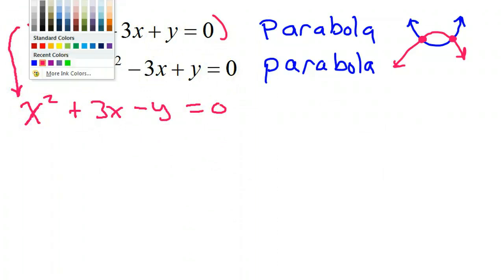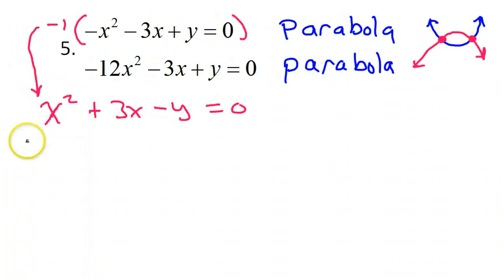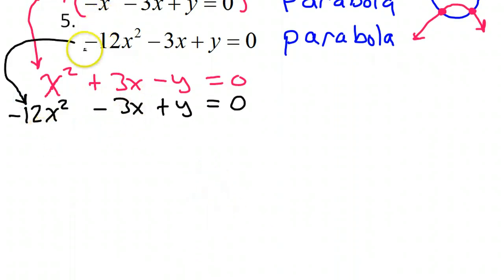The bottom equation didn't change, so I'm just going to copy it down as is. So the bottom equation is -12x² - 3x + y = 0. And I just brought that equation down unchanged. So you see that we have the opposites that cancel like we wanted. The x terms cancel and the y terms cancel.